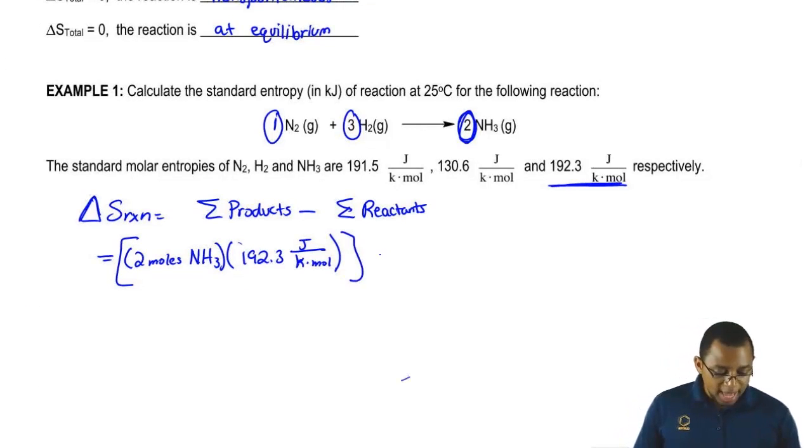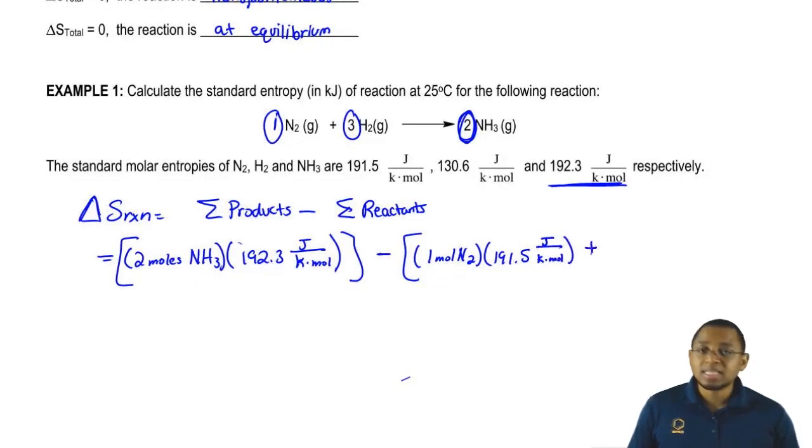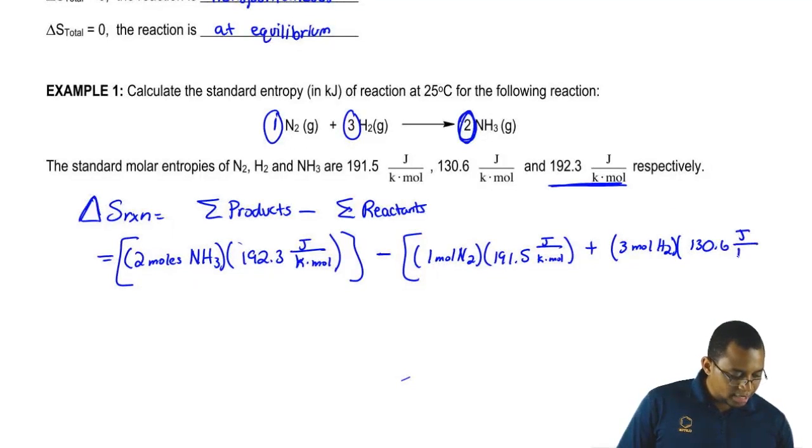That's our products minus our reactants. We have 1 mole N2, each one is 191.5 joules over K times moles, plus the other reactant, which is 3 moles of H2, times 130.6 joules over K times moles.